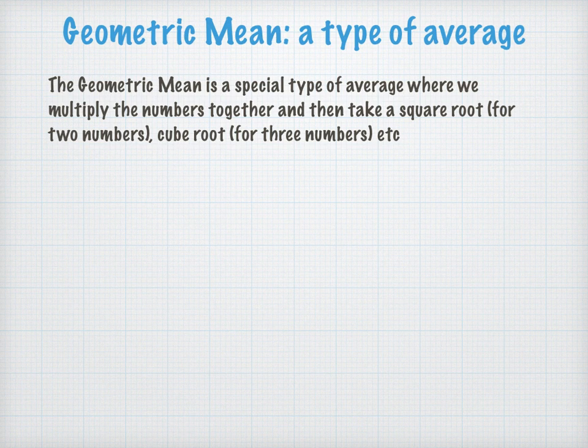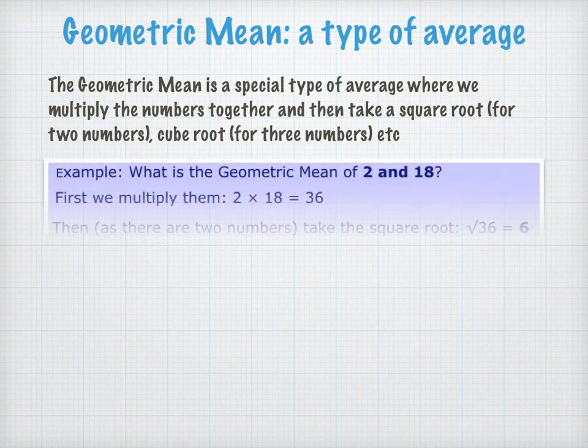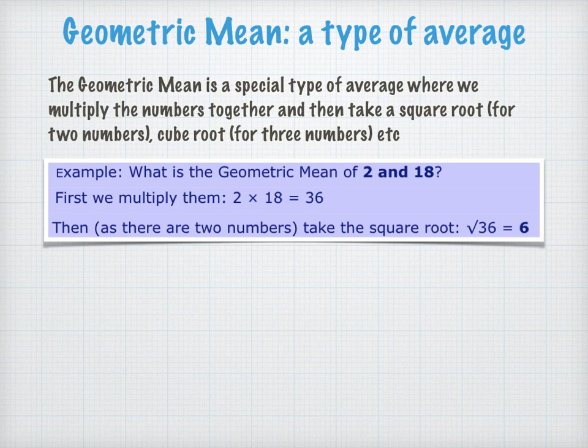If we're talking about two numbers, we multiply them together and take the square root. If we're finding the geometric mean of three numbers, we'll multiply the three numbers together and then take the cube root. Let's start with finding the geometric mean of 2 and 18. We multiply them together to get 36 and then take the square root of 36. So the geometric mean of 2 and 18 is 6.